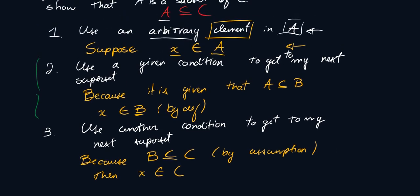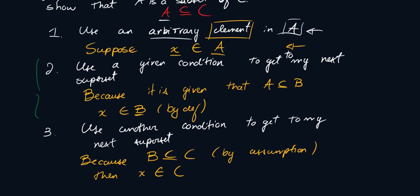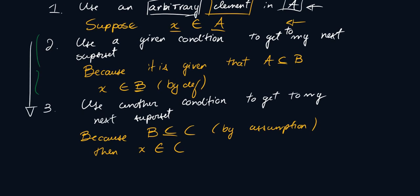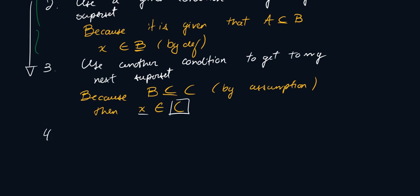So that's my third step, and you're probably wondering why exactly I'm doing this and why it matters. Well, it's because the element that I chose was arbitrary, meaning that arbitrary sort of means that it doesn't matter what it was. The only thing we knew about it was that it was in A.